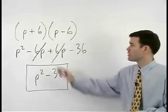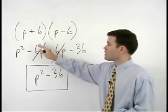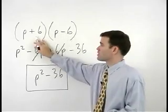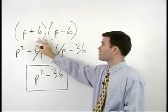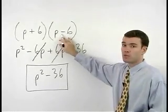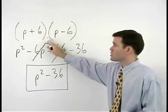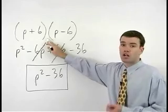If you take a look back at the original problem, notice that these two binomials are identical except that one has a plus in the middle and one has a minus in the middle. These types of binomials are called conjugates.